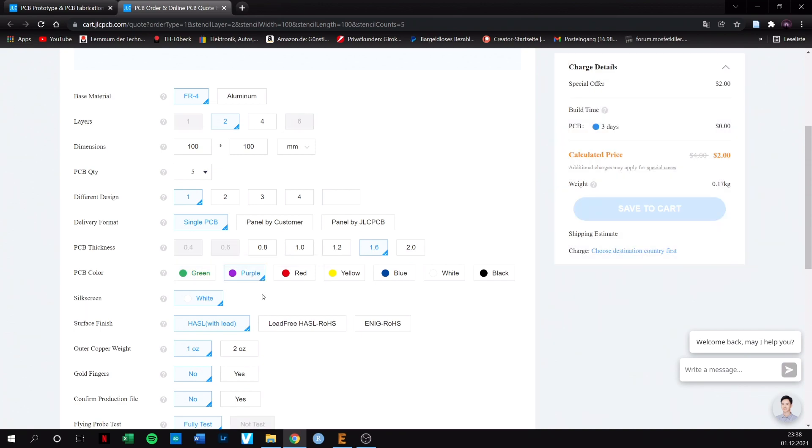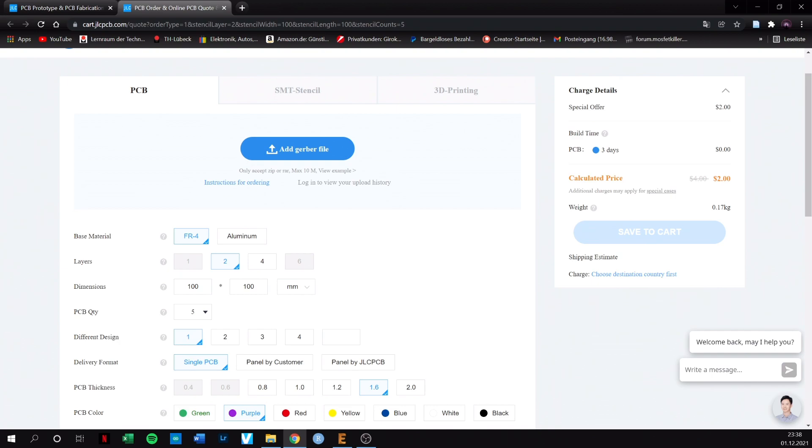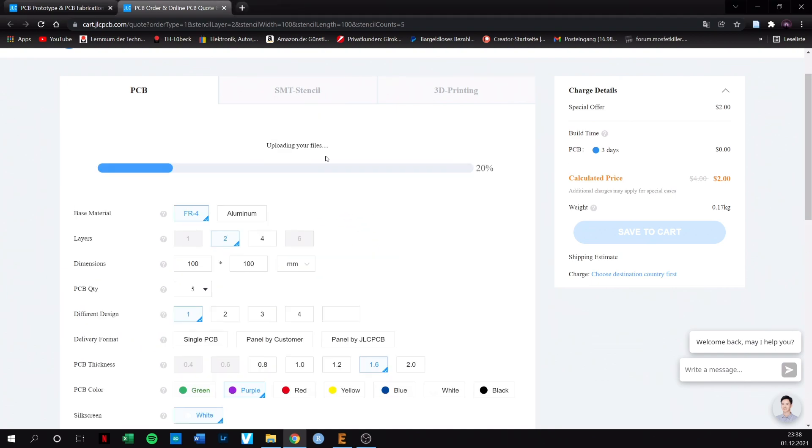Purple is sexy, isn't it? Just upload the file, order and you're done. Within 24 hours your PCB will be produced. And a few days later they will arrive.